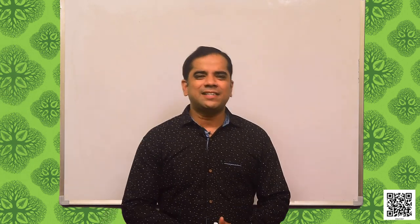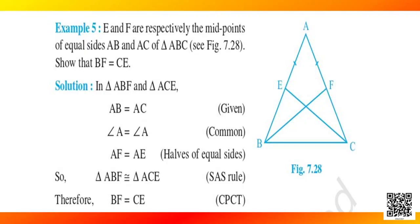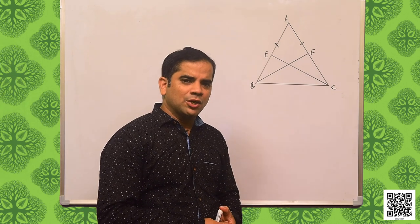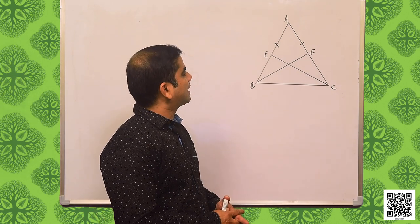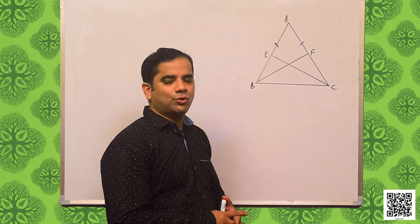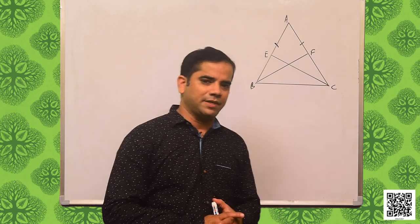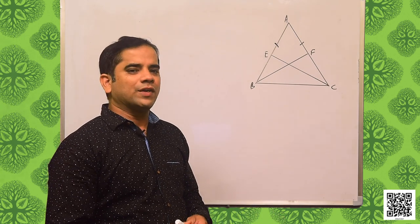Students, let us discuss example 5. It says: E and F are respectively the midpoints of equal sides AB and AC of triangle ABC — show that BF is equal to CE. I have constructed the figure as given in your book. As per the given data, ABC is a triangle in which AB is equal to AC, and E and F are the midpoints of sides AB and AC respectively. Let us go for the solution.